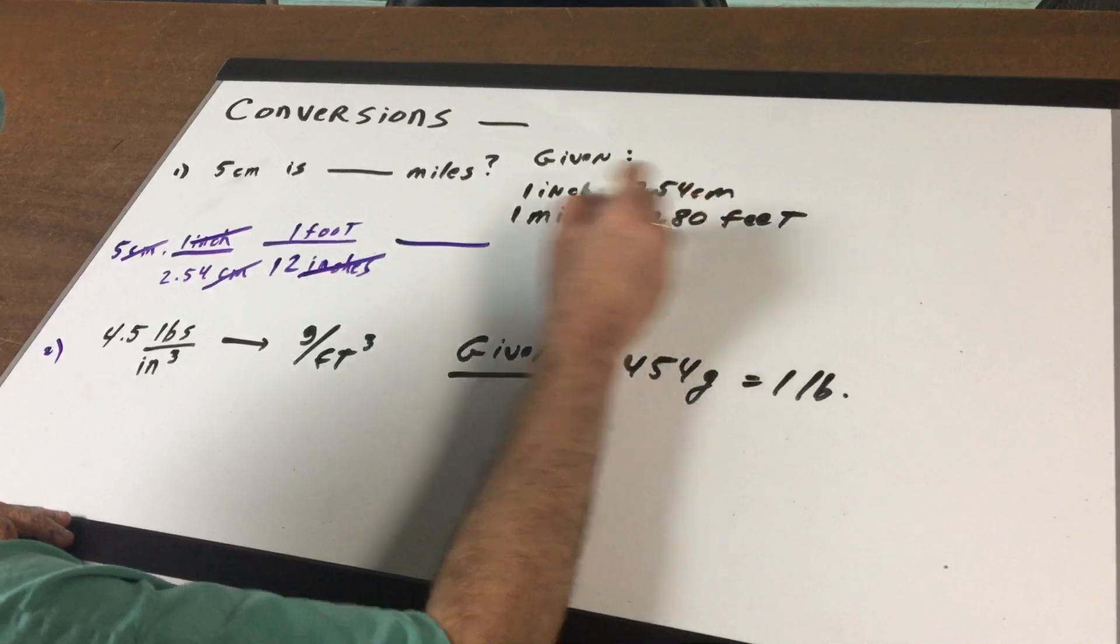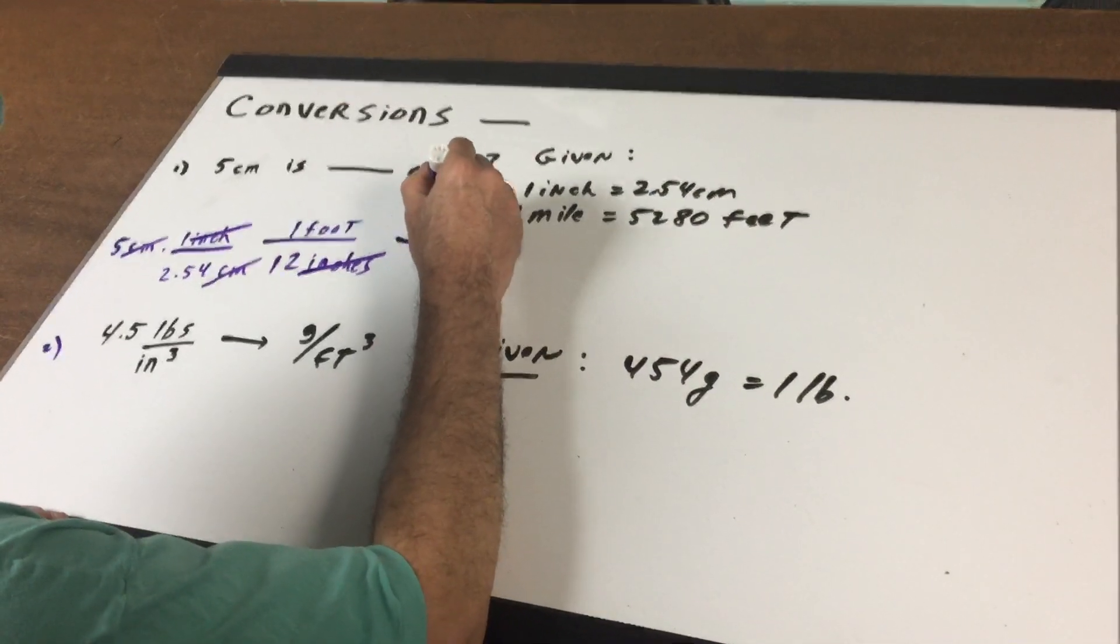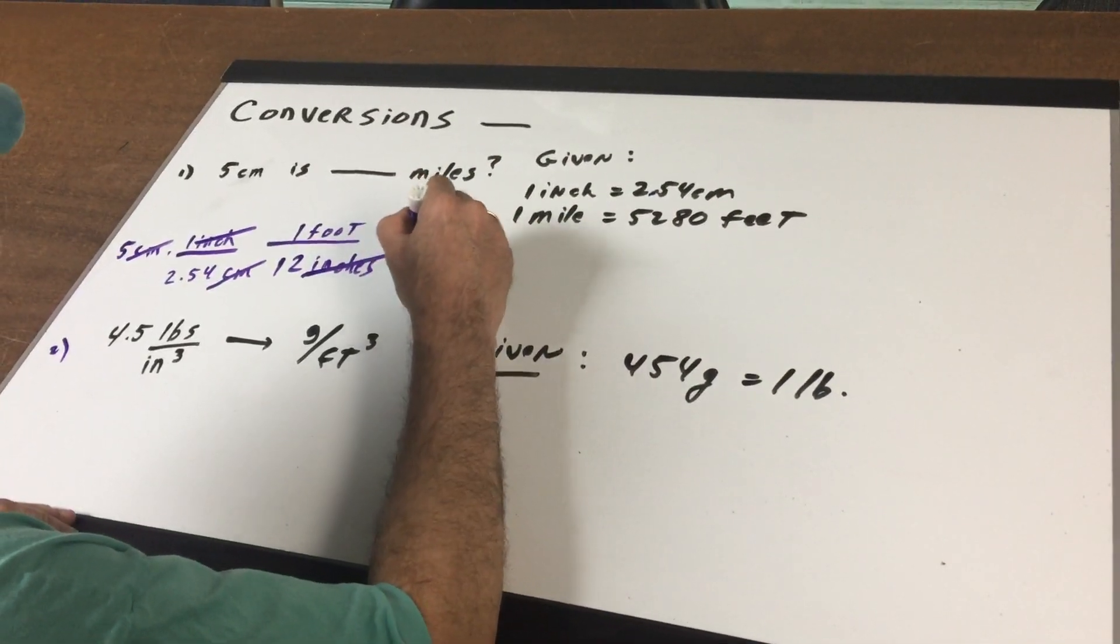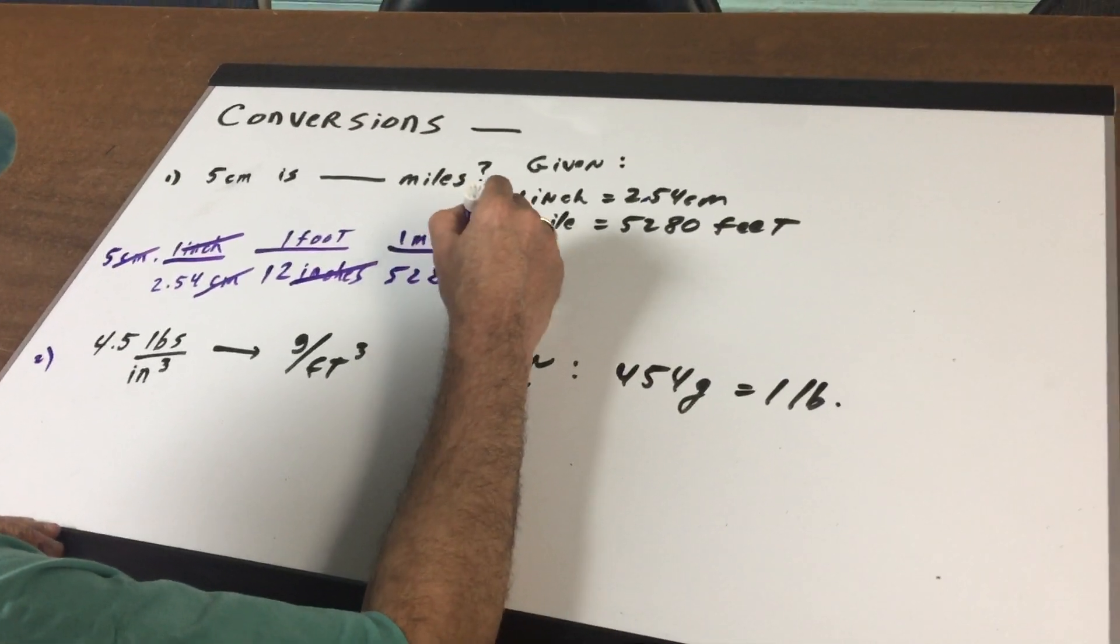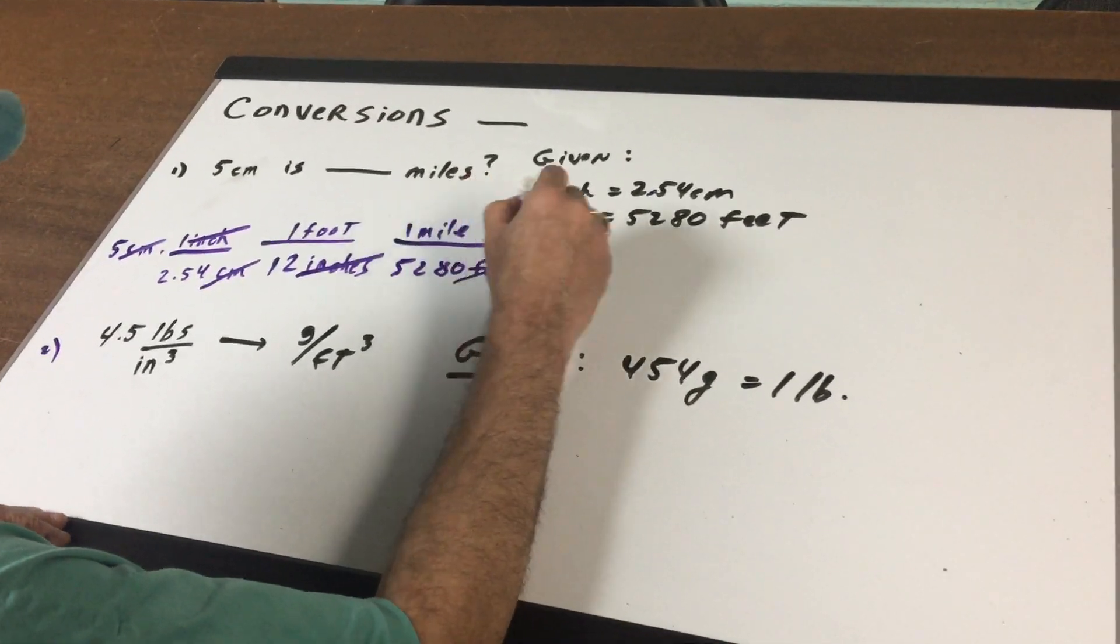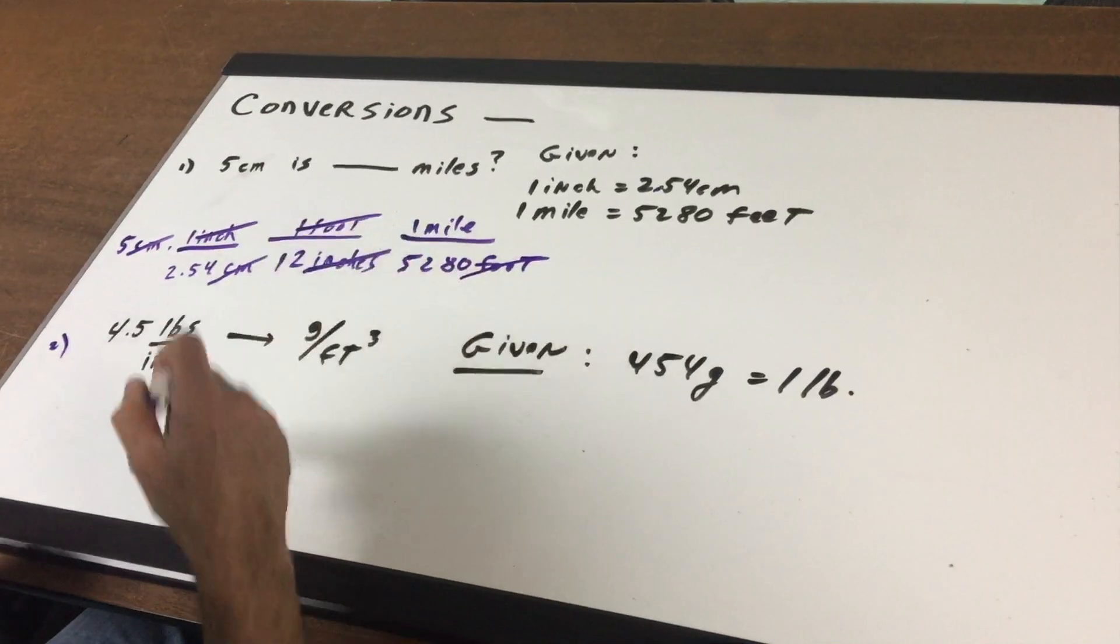And now I see the kill. We know that one mile is 5280 feet. Foot and feet interchangeably can cancel out. So I'm left with miles.